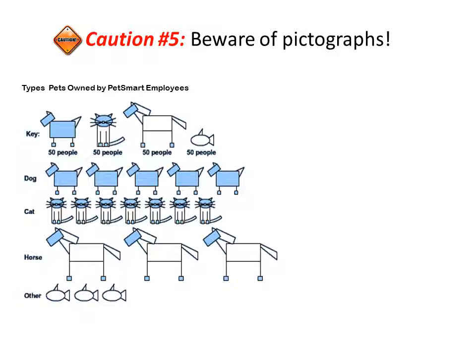Finally, we want to be aware of pictographs — something not really discussed in the summer packet. A pictograph is a picture used to represent a certain number of individuals. This example shows types of pets owned by PetSmart employees, with a key indicating that one dog, one cat, one horse, and one fish each represents fifty people.